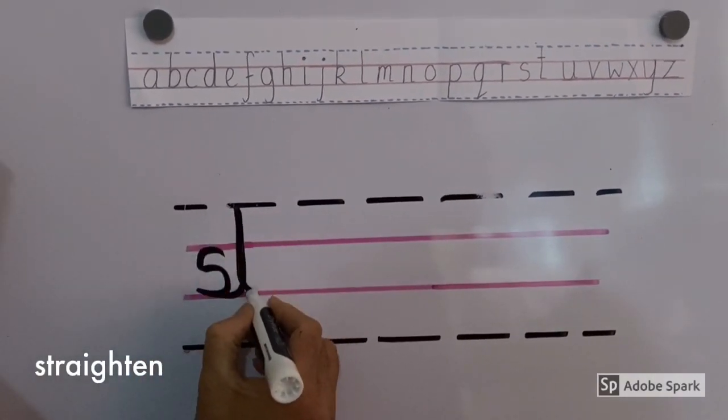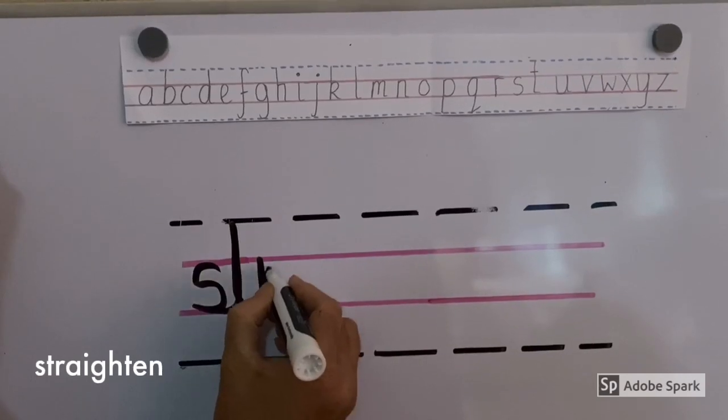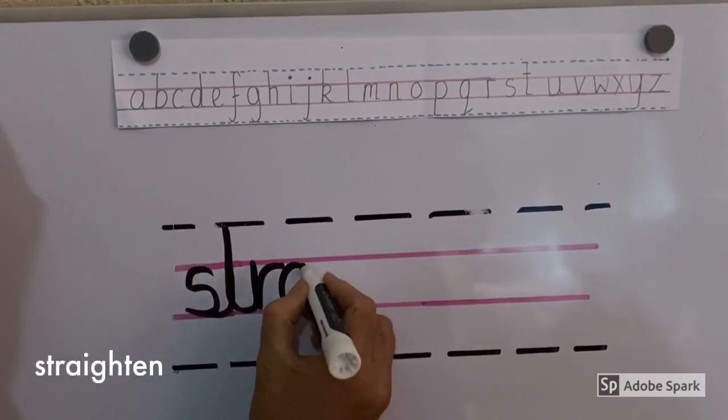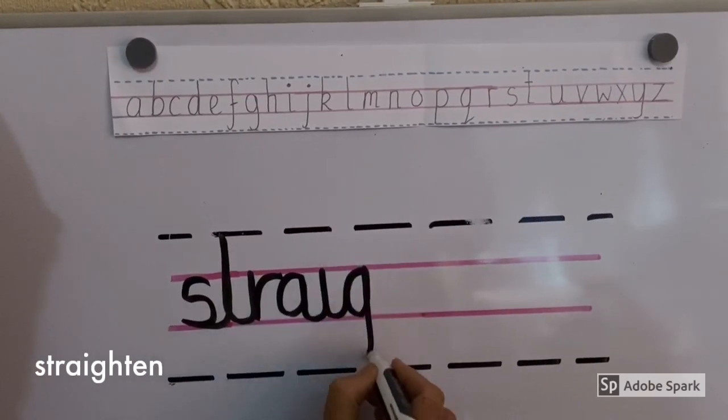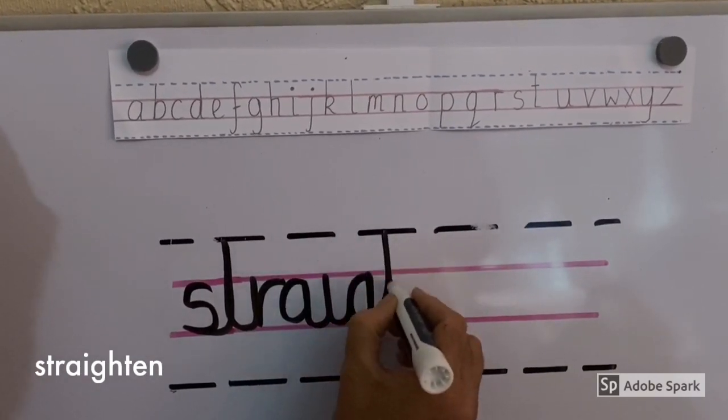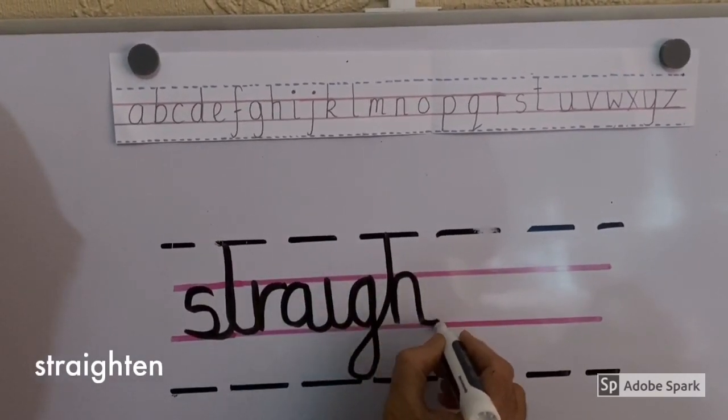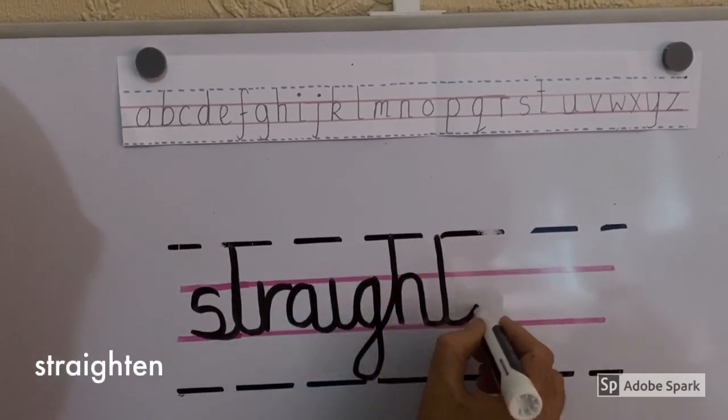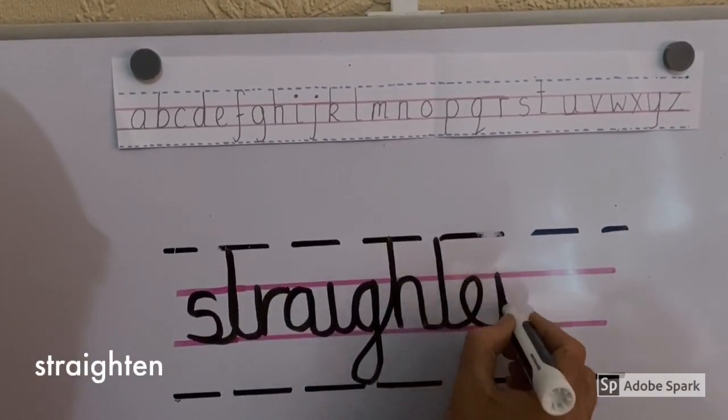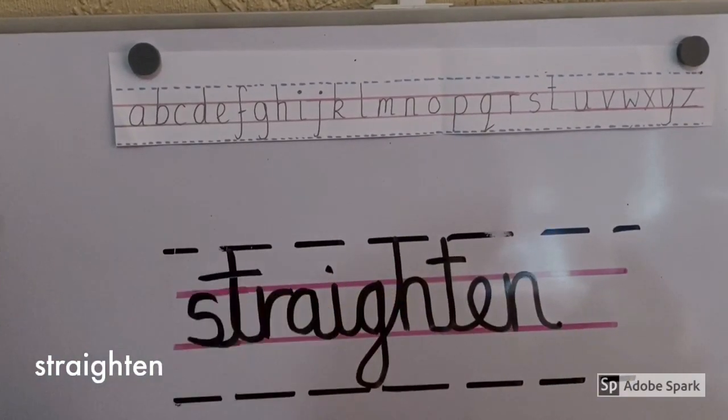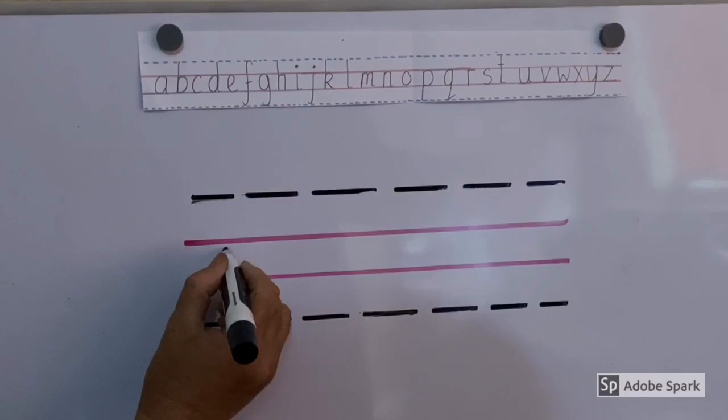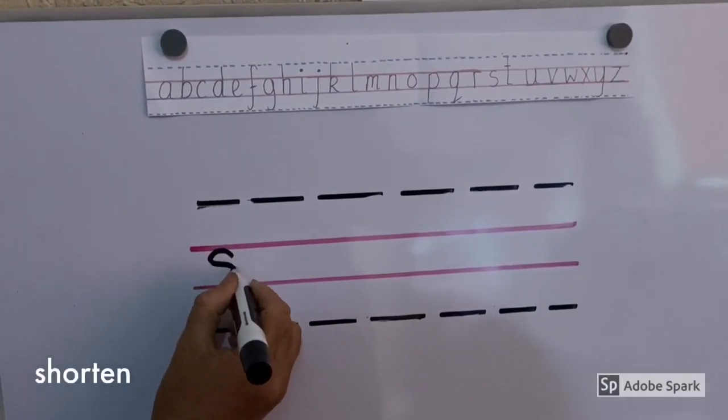Straighten. S, T, R, A, I, G, H, T, E, N. Straighten. Straighten means to make or become straight. Straighten.